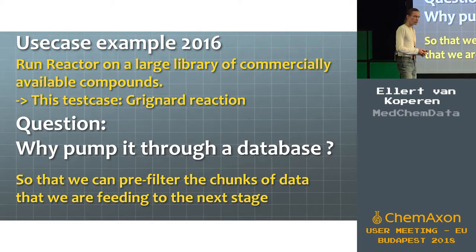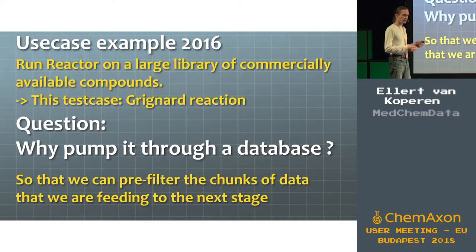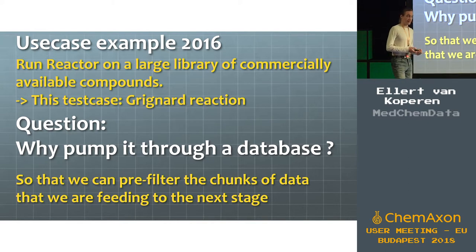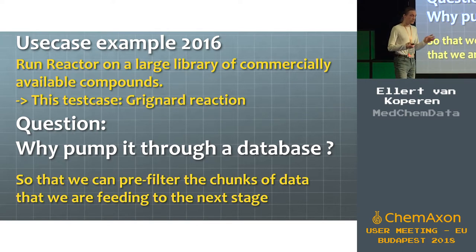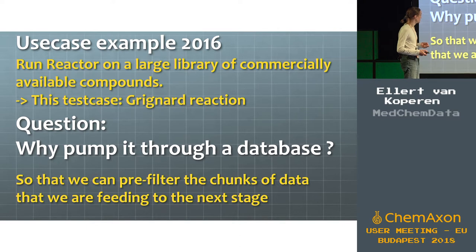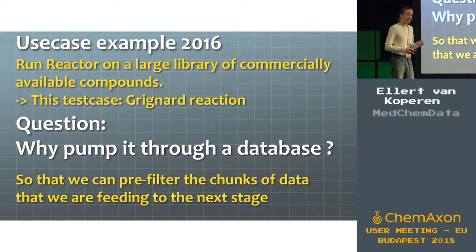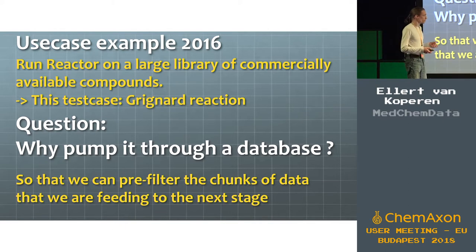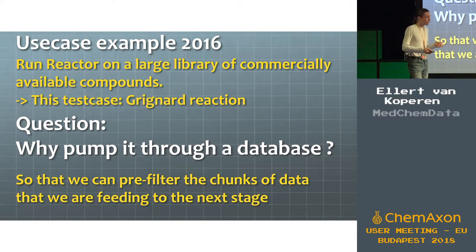About two and a half, maybe three years ago, we started with this mad idea. We wanted to expand chemical space and throw everything at Reactor that it could chew on, and just see what happens. For that we devised a kind of torture test, and as a test case we used the Grignard reaction — basically a random choice, but it turned out to be a very, very nasty one, one that the cartridge itself had big problems with. Why pump it through a database? Because we want to repeat this task many times, do the searches many times, refine how they work, and then do it with all the other reactions we can throw at it. That was the initial idea. It didn't work out as we wanted, but we learned a lot from it.